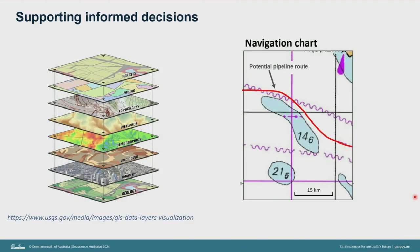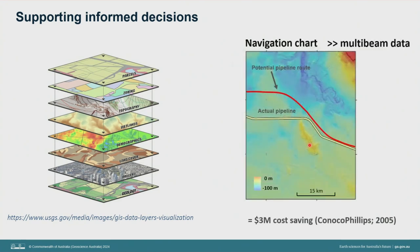In this hydrographic chart example, a proponent was proposing to put in a pipeline. Because pipelines aren't suited to steep seabed surfaces, they routed it around the northern end of an elongate ridge form — the best available data at that stage. But when additional data was collected and gridded into a higher resolution multi-beam grid, the extent of that ridge didn't go anywhere near as far to the northwest as they had believed. They could route the pipeline further south, saving three million dollars — and this was 20 years ago.